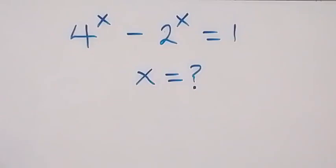Hello, you are welcome. How to solve this nice exponent problem? We have 4 raised to power x minus 2 raised to power x equals to 1.